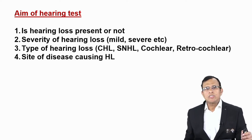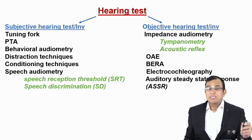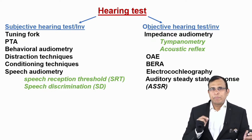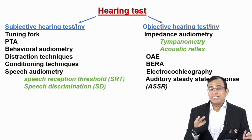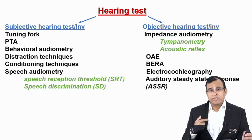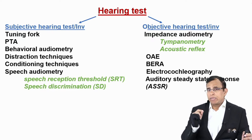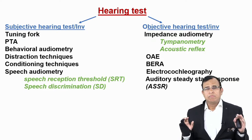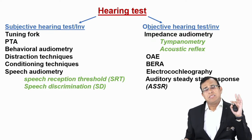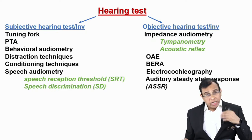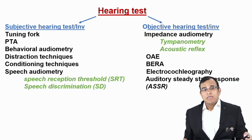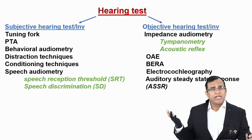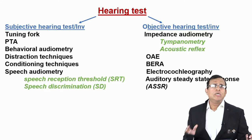Hearing tests can be divided into two broad categories: subjective and objective. In subjective investigations the patient has to cooperate — you give a sound stimulus and the patient must respond. This can only be done in a cooperative patient: an adult who is mentally sound, not sleeping, not in a coma, and willing. A small child, a newborn, a patient in a coma, or a mentally challenged patient cannot do a subjective test.